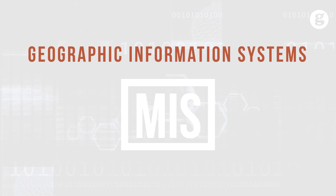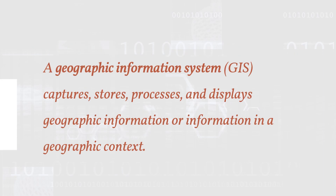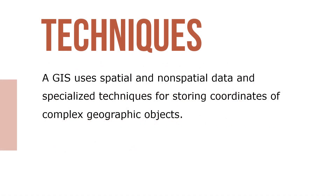Let's take a look at well-designed geographic information systems, known as GIS. A geographic information system captures, stores, processes, and displays geographic information, or information in a geographic context. A GIS uses spatial and non-spatial data and specialized techniques for storing coordinates of complex geographic objects.